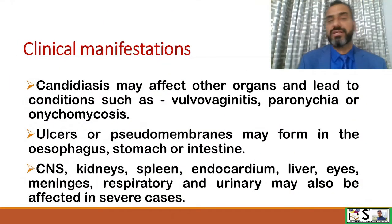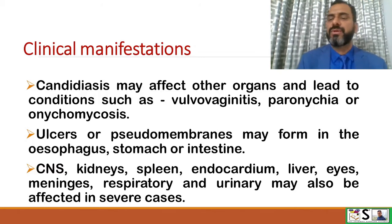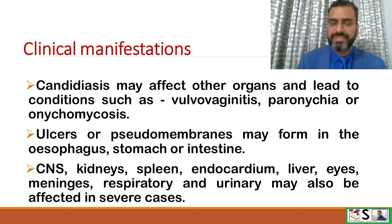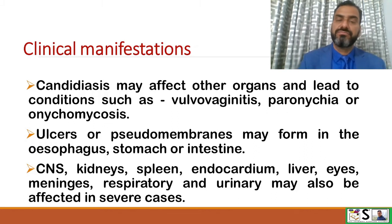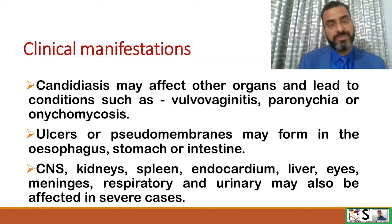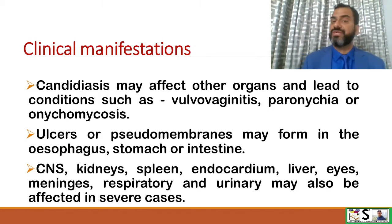Candidiasis may affect other organs and lead to conditions such as vulvovaginitis, paronychia, or onychomycosis. Ulcers and pseudomembranes may form in the esophagus, stomach, or intestine. In severe cases, the central nervous system, kidneys, spleen, endocardium, liver, eyes, meninges, and the respiratory and urinary systems may also be affected.